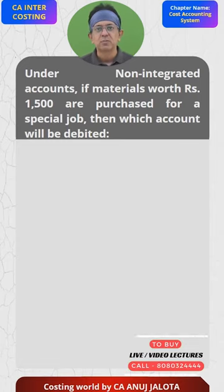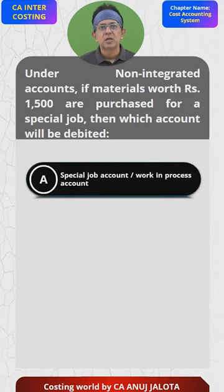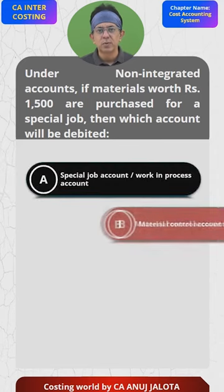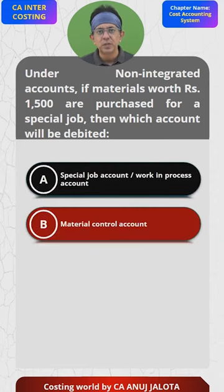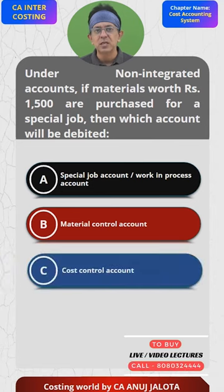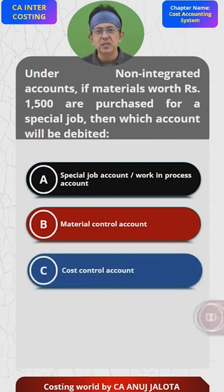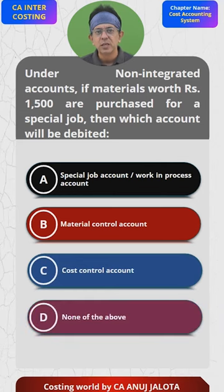Four options are: A) Special job account or WIP account, B) Materials control account, C) Cost control account, meaning your GLA account, and D) None of the above.